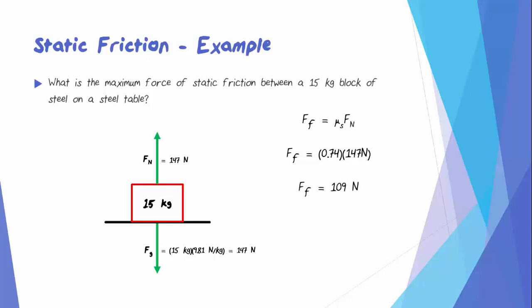But remember, this is the maximum friction. If we only exert an applied force of 50 newtons, the static friction as a reaction force is only 50 newtons. If we exert a force of 109 newtons, the reaction force will be 109 newtons. However, if we were to exert an applied force of 110 newtons, the static friction as a reaction force could only be 109 newtons. This would result in a net force that would cause the object to start accelerating, which would then turn into a kinetic friction problem.